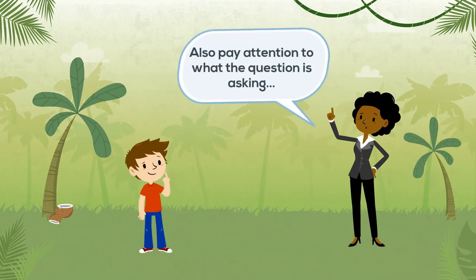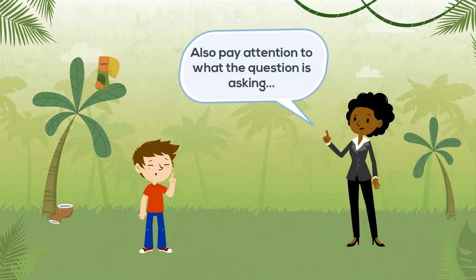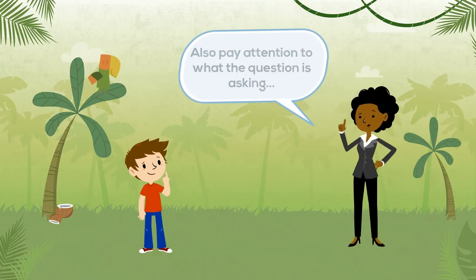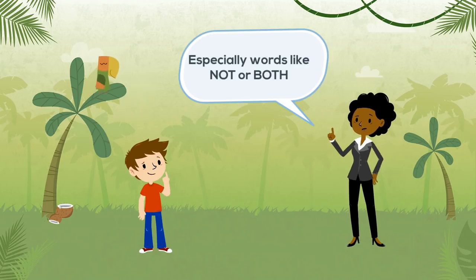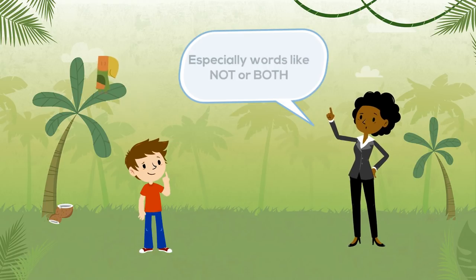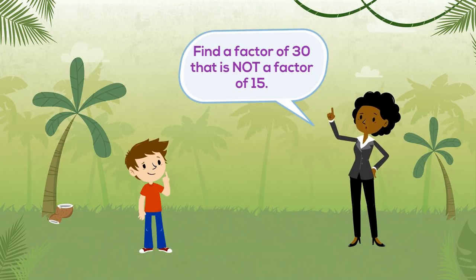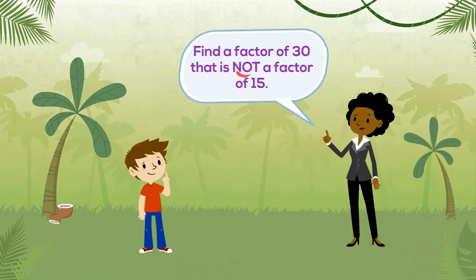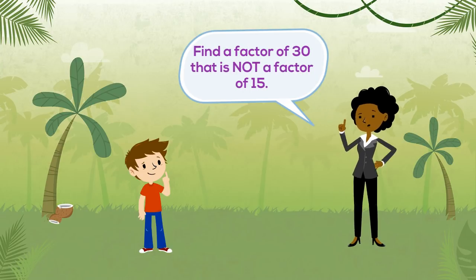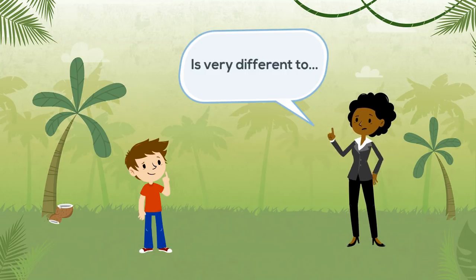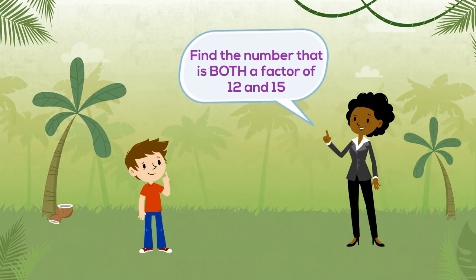Also pay attention to what the question is asking, especially words like 'not' or 'both'. For example, 'find a factor of 30 that is not a factor of 15' is very different to 'find the number that is both a factor of 12 and 15'.